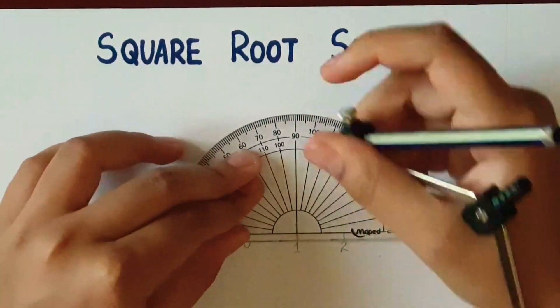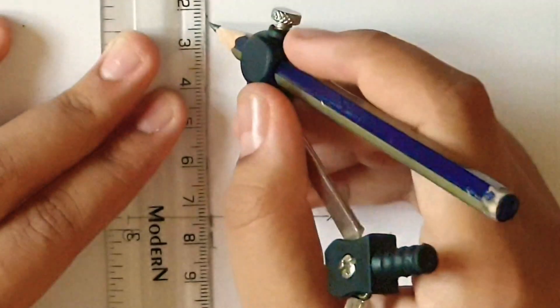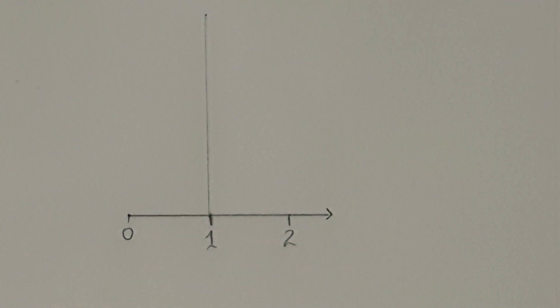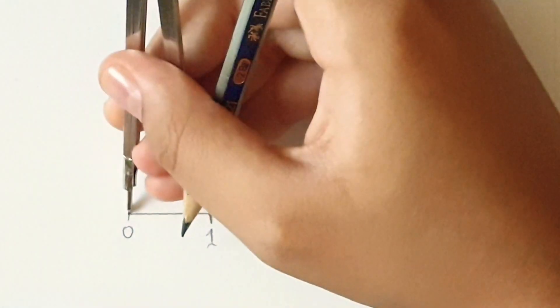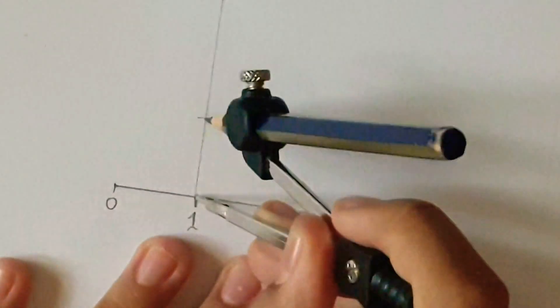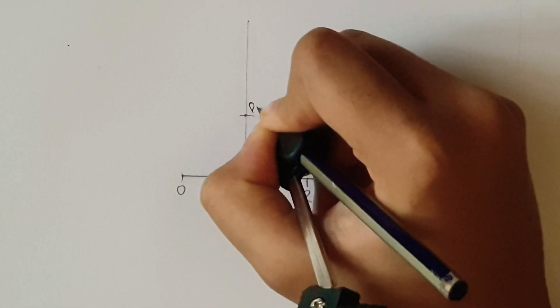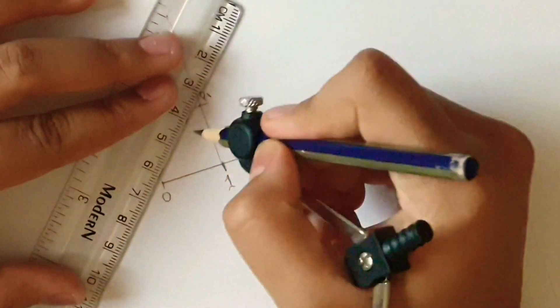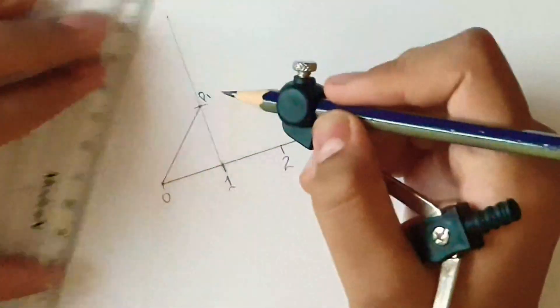Now place the protractor on point 1, mark 90 degree angle and draw a line. After that, take the compass, measure from 0 to 1, and keep the point at 1 and cut an arc and name that point as P1, then join 0 and P1.